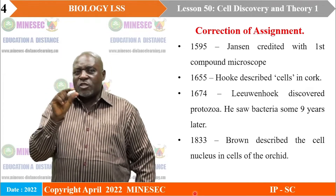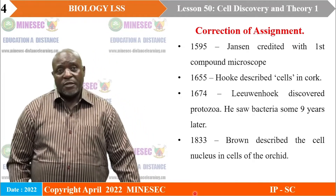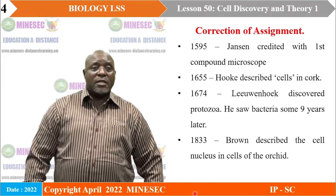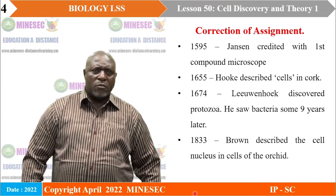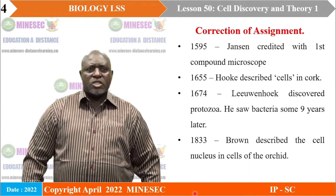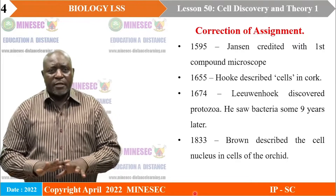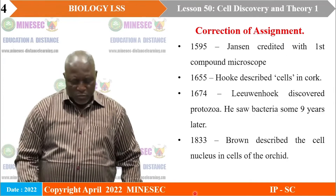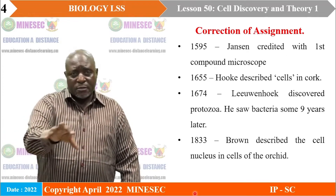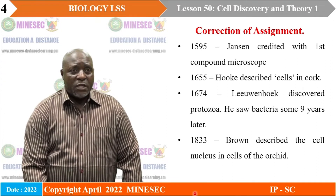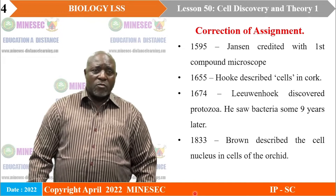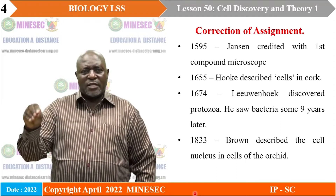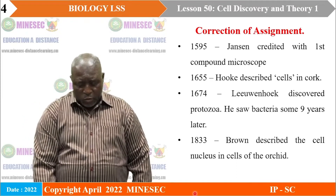Hooke saw that the cells had many small holes — that was 1655. We can already appreciate how long scientists had been at work. In 1674, another scientist called Leeuwenhoek discovered protozoa and saw bacteria, using lenses to observe them in nature, finding tiny organisms magnified by these lenses. In 1833, Brown described the cell nucleus in the cells of an orchid. So the components of the cell that we understand so well today were discovered piecemeal, and it took a long time.